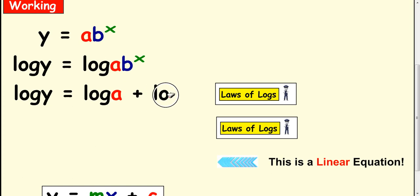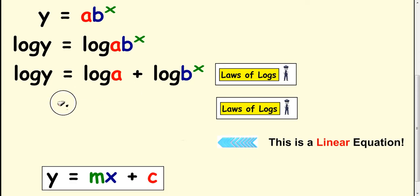Log a against log b to the x with a plus, from log laws 1, multiplication becomes add. Take your x down from log law 3.